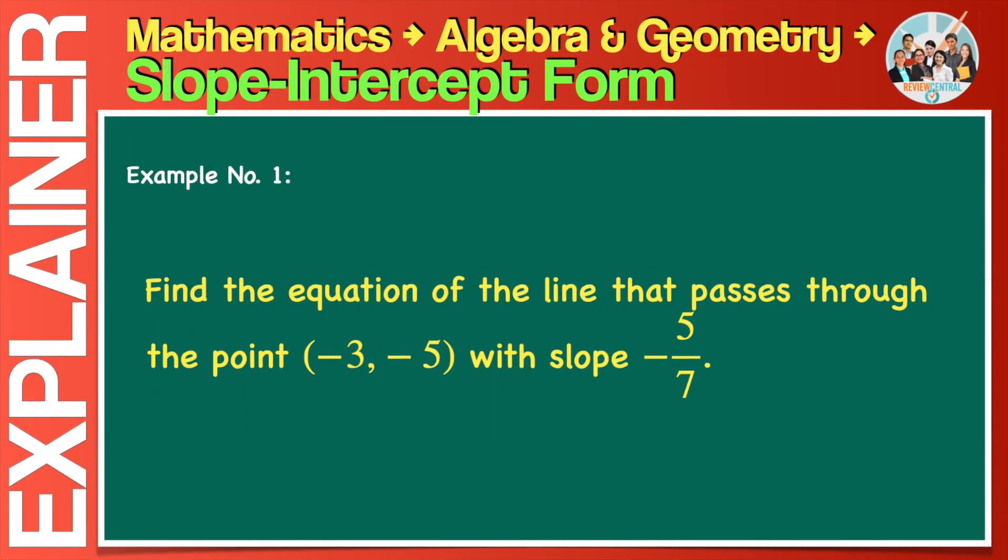Sample problem number one. Here's an example of a question involving the slope-intercept form. Find the equation of the line that passes through the point, x equals minus 3 and y equals minus 5, with slope equals minus 5 over 7. This is a typical and very simple math problem.